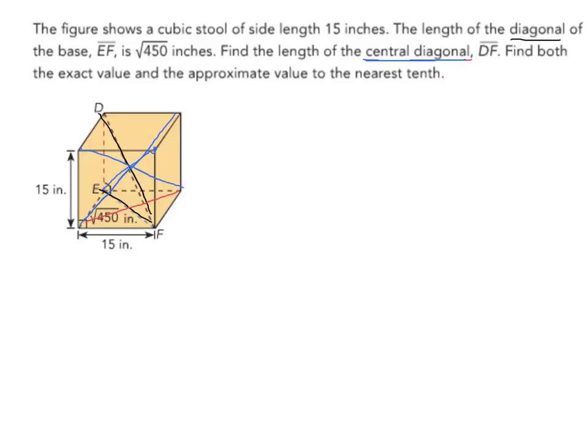All right, so now let's get into the question. We have this figure, and we know that one of the side lengths is 15, and we know that the other side length is √450. So let's set up our Pythagorean theorem. We have a² + b² = c².